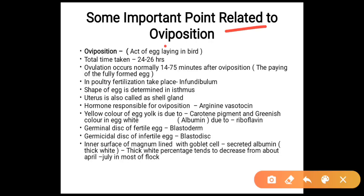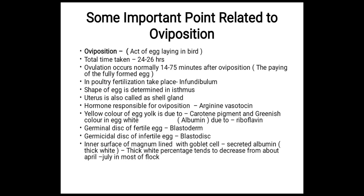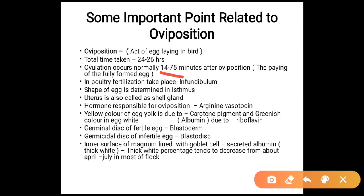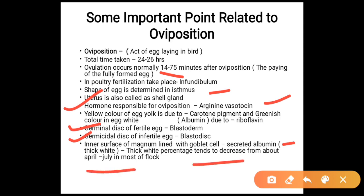Important points related to oviposition: the act of egg laying in birds is known as oviposition; the time taken is about 24–26 hours. Ovulation normally occurs about 14 to 75 minutes after oviposition. Fertilization takes place in the infundibulum. The shape of the egg is determined in the isthmus. The hormone responsible for oviposition is arginine vasotocin. Yellow color of egg yolk is due to carotene pigments; green color in egg white is due to albumin and riboflavin. The germinal disc of a fertile egg is called blastoderm; of an infertile egg, blastodisc. The inner surface of the magnum is lined by goblet cells which secrete albumin. Thick white percentage tends to decrease from April to July in most flocks.